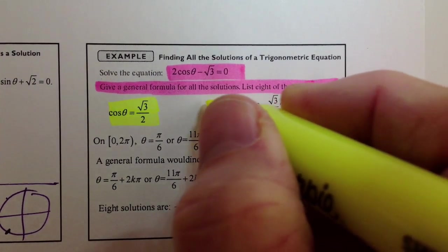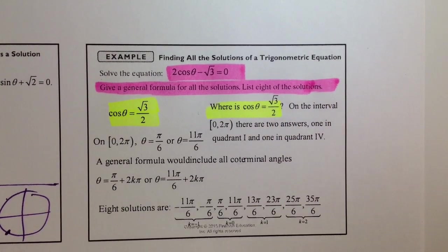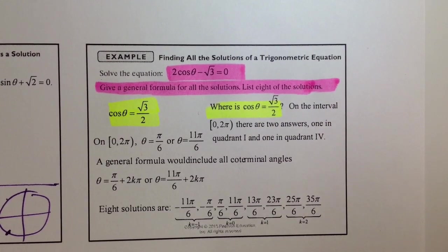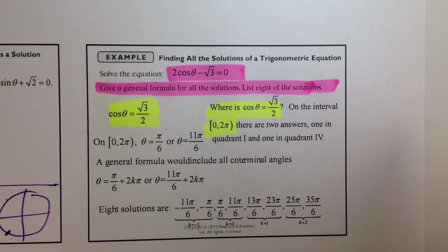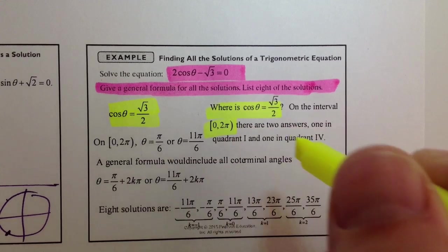So the question you want to ask yourself is, where is the cosine of theta equal to radical 3 over 2? And on the interval from 0 to 2 pi. So there's two answers. One,